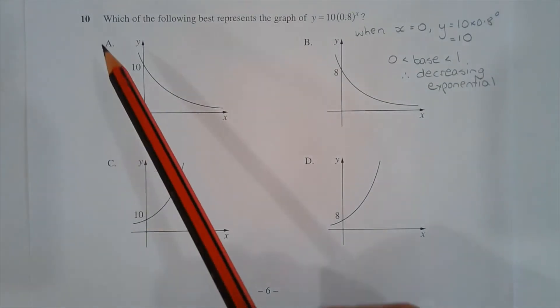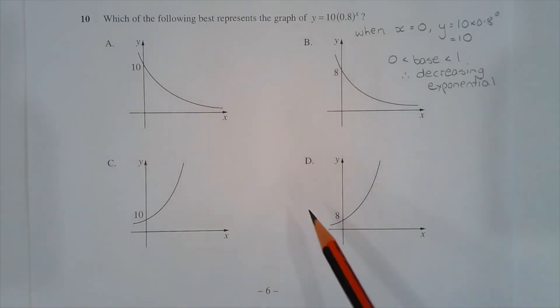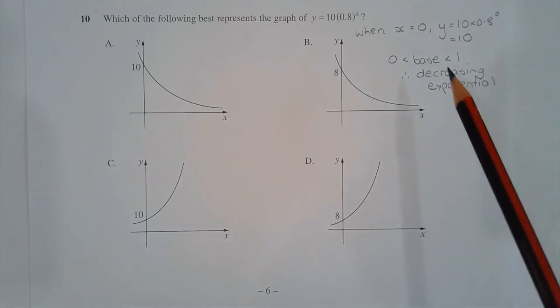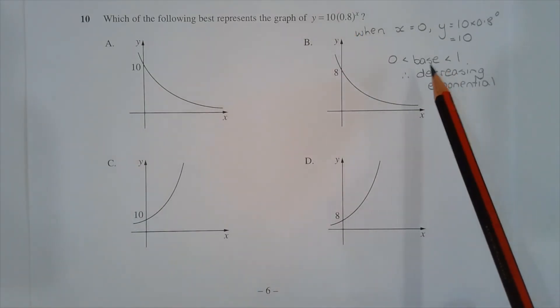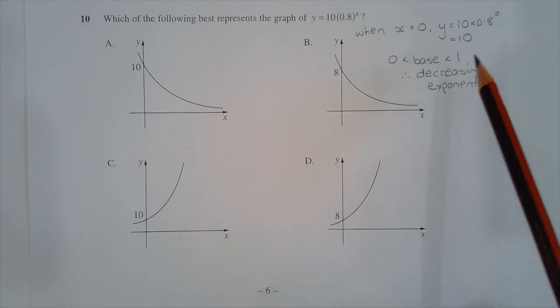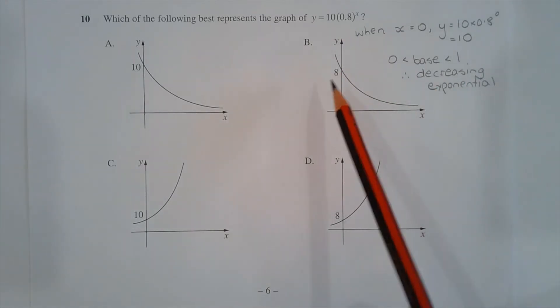So the two options at the moment are either A or C, so B and D are out. Next, consider the value of the base. Because the base is between 0 and 1, this is a decreasing exponential graph going from left to right.